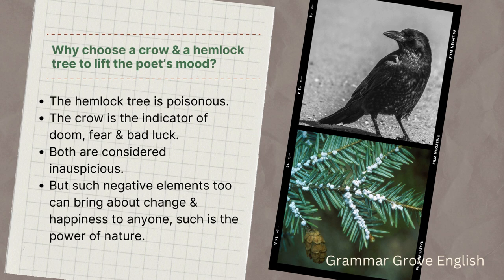It is what we humans like to think, but it is not true. A crow is just a bird; it is a part of nature. A hemlock tree, even though it is poisonous, is just a part of nature. A crow is not actually going to harm you in any way. These are just superstitions or preconceived notions that we humans have. The crow and the tree are just agents of nature — it is us people who are superstitious and see them as negative elements. Otherwise, they are just part of nature, nothing else.